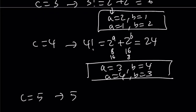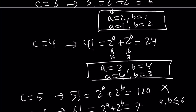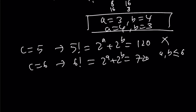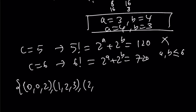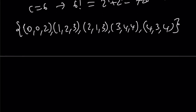For c equals 5, we get 5 factorial equals 120. Unfortunately, by adding two powers of 2 where a and b are at most around 6 (since 2^6 = 64), we cannot get 120 — no solutions. For c equals 6, we get 6 factorial equals 720, and we are unable to get 720 by adding two powers of 2 — no solutions either. That gives us all the solutions: (0,0,2), (1,2,3), (2,1,3), (3,4,4), and (4,3,4) — a total of 5 solutions, where the third number is always c.